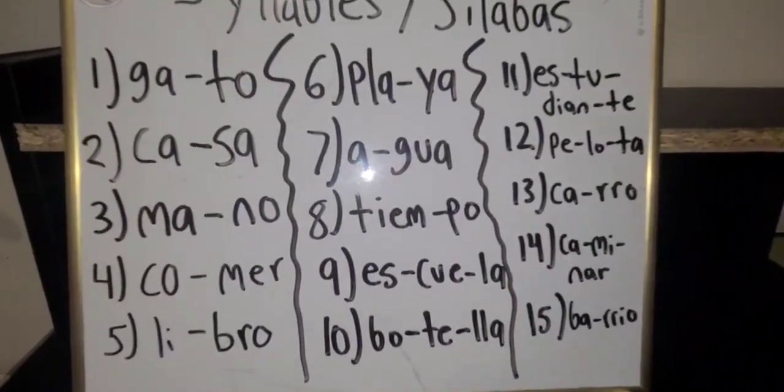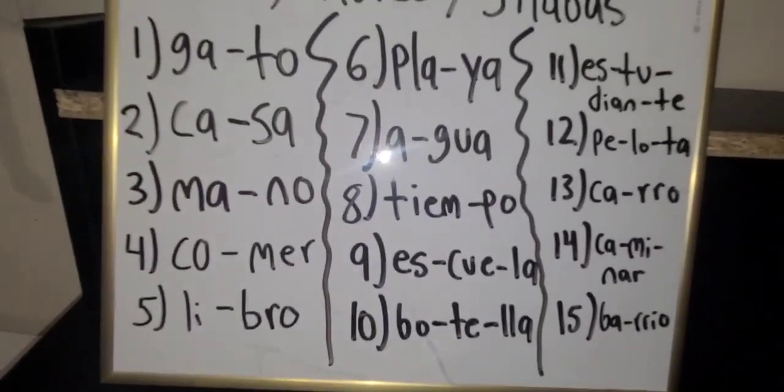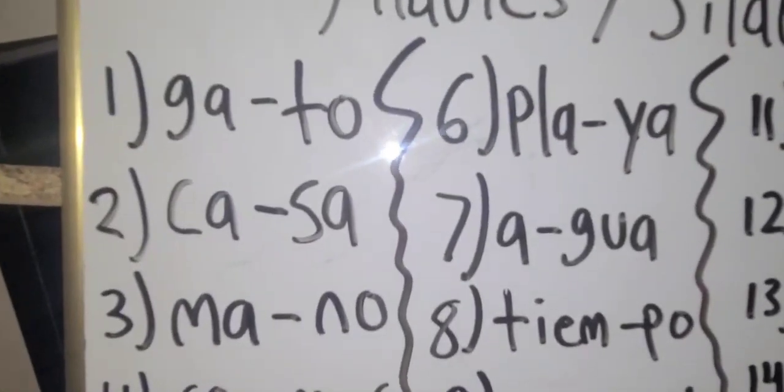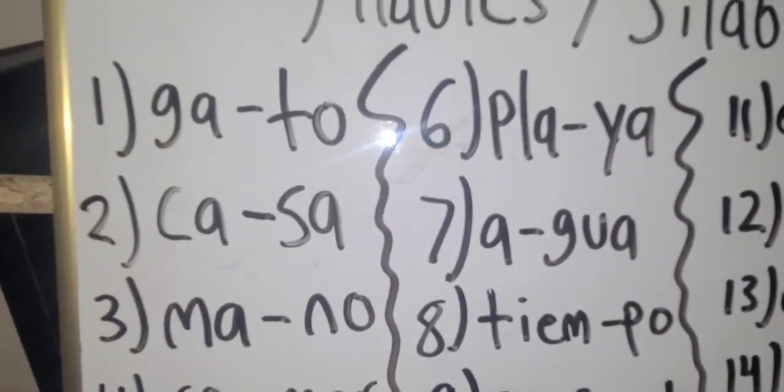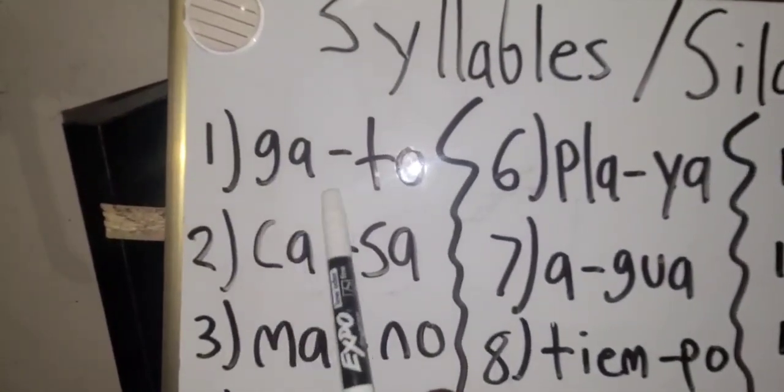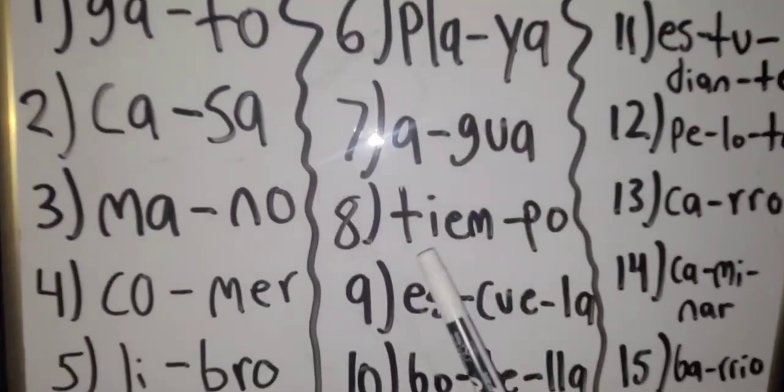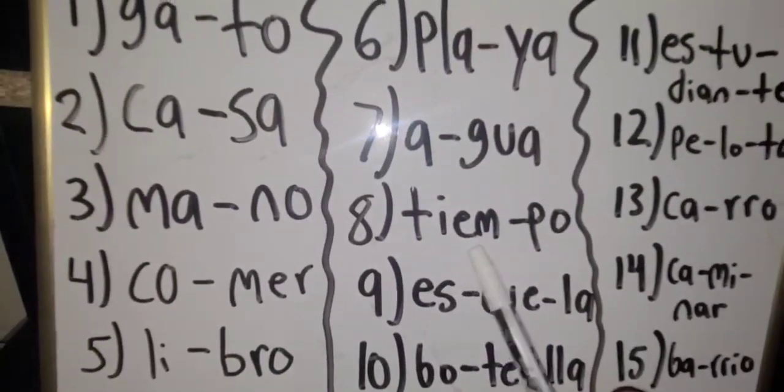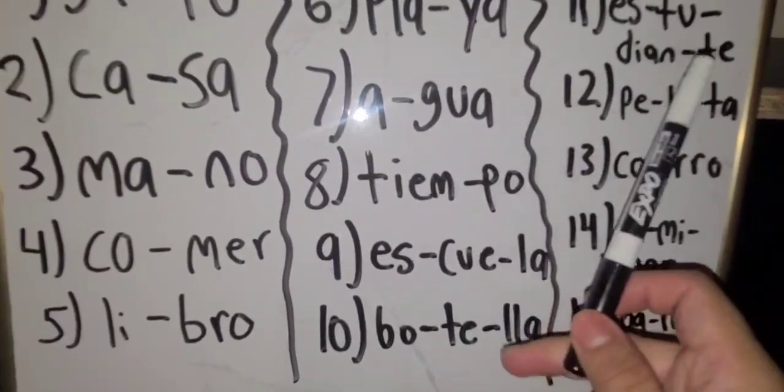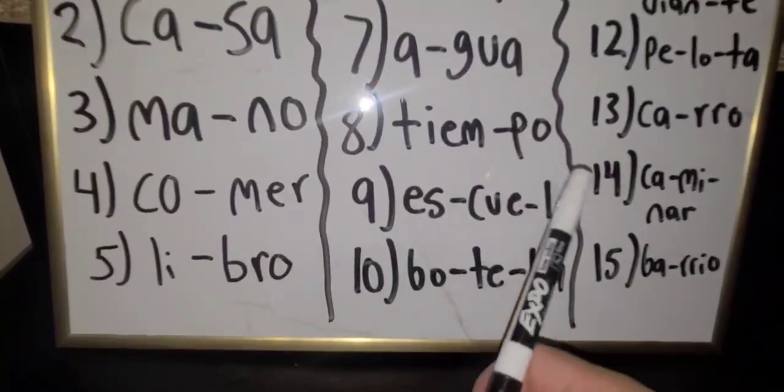So a syllable is a segment or a chunk of a word that contains a vowel sound. For example, number one has ga-to. Ga-to. For example, right here we see ga with the a, to with the o. Over here we have tiem with the e, po with the o. So each segment that is broken up contains a vowel. Bo, te, lla.